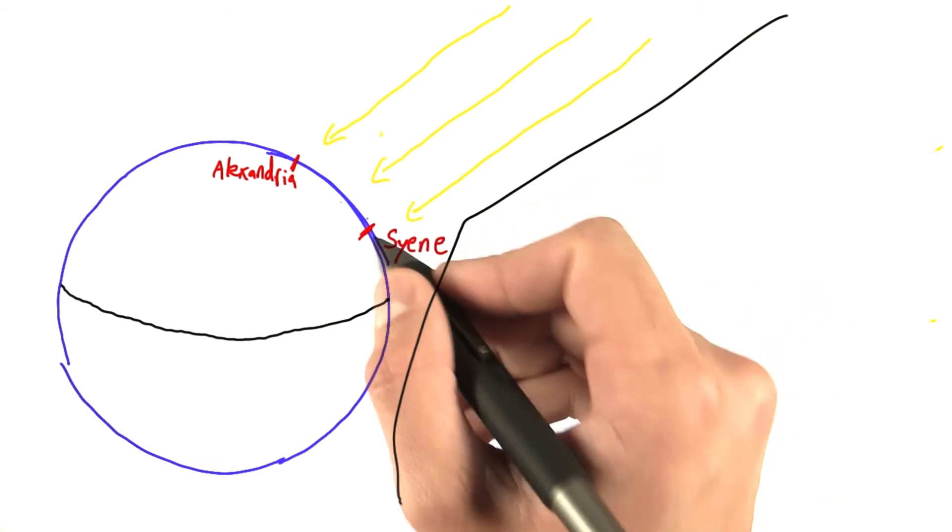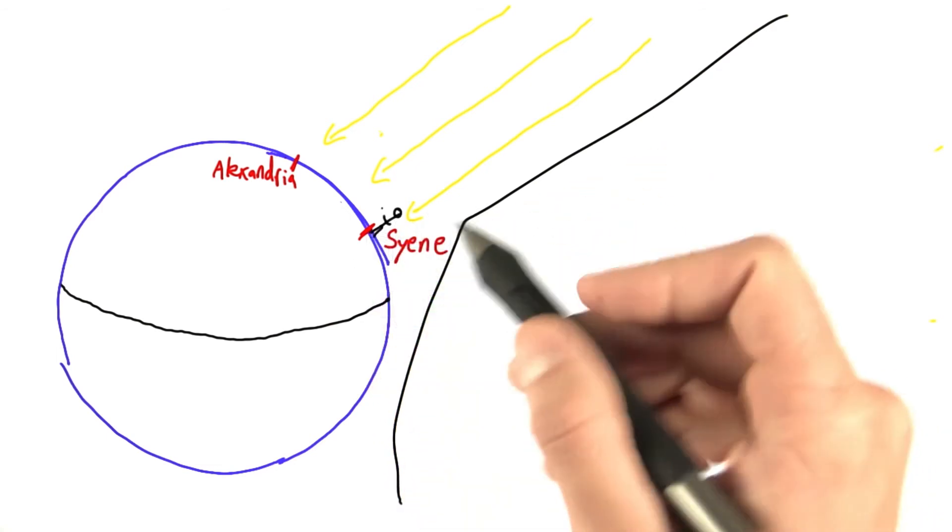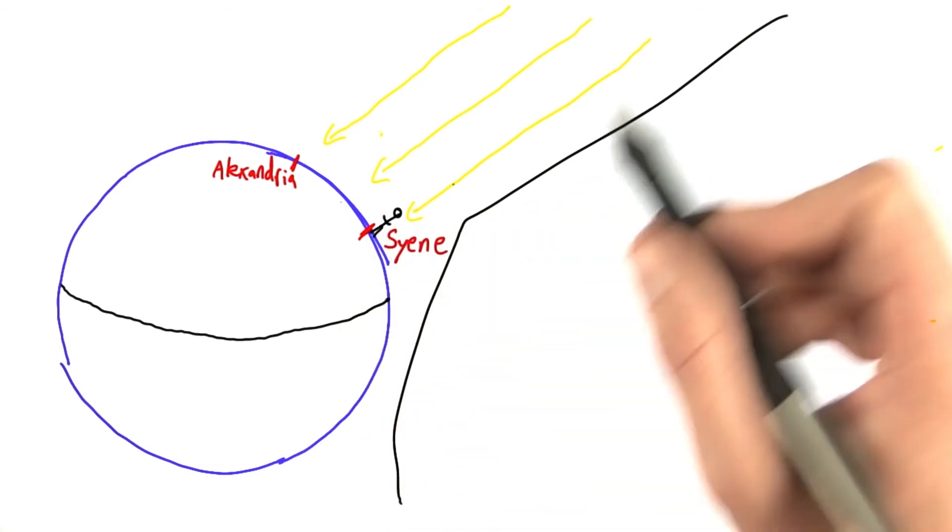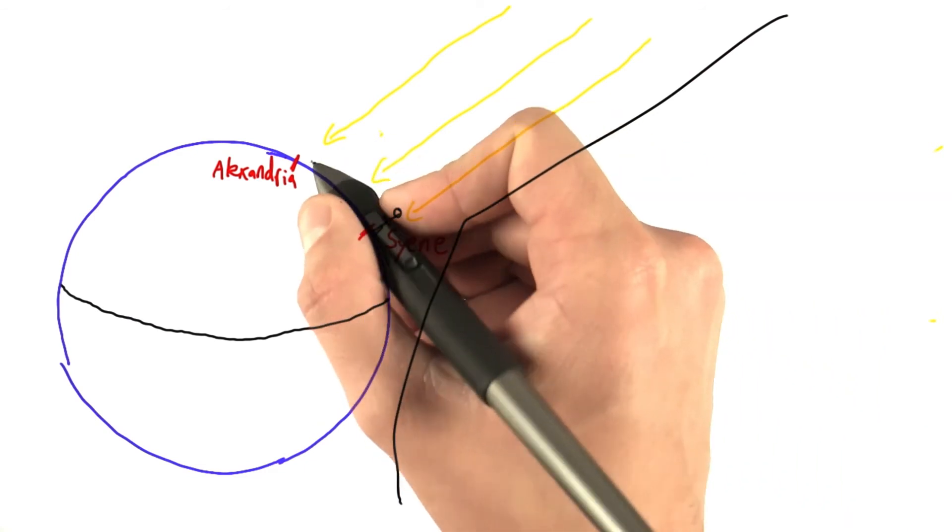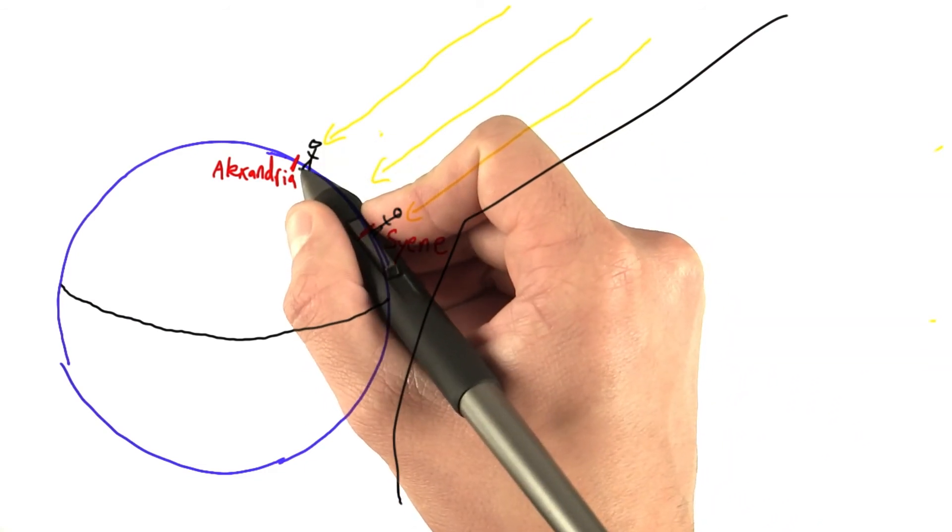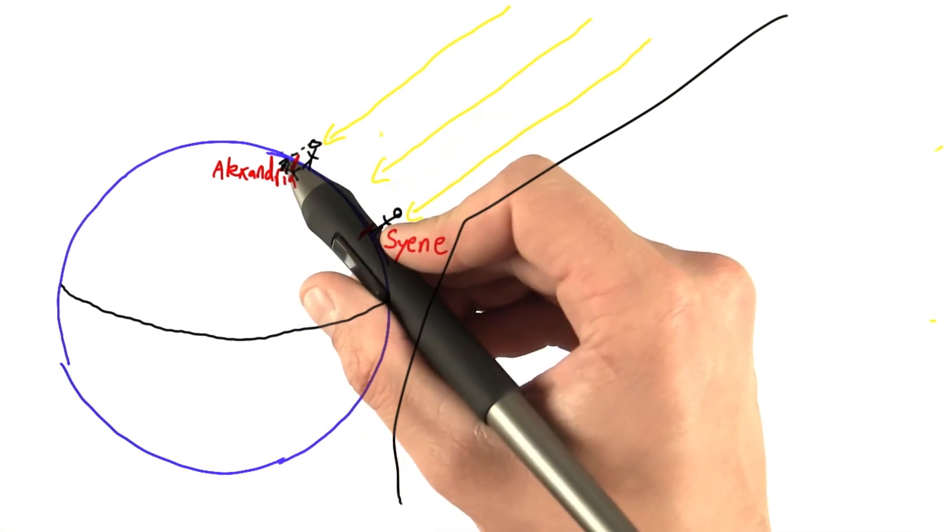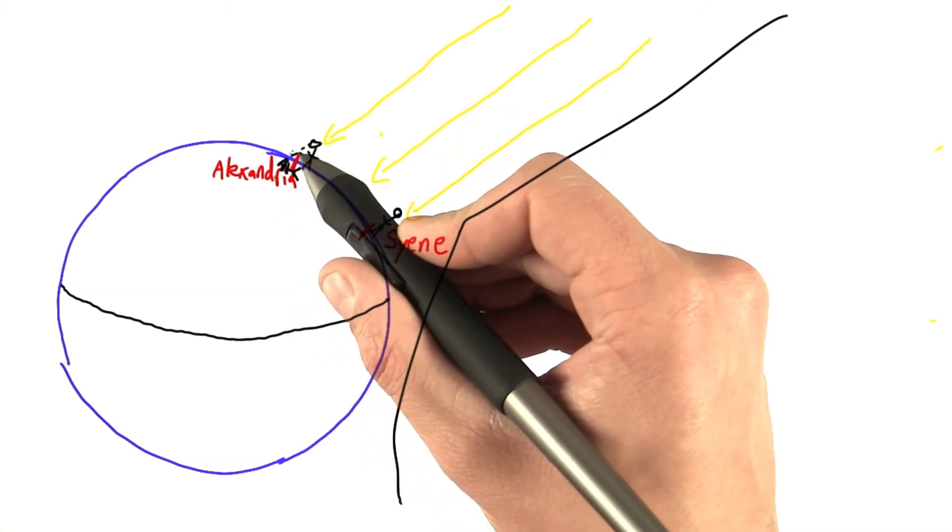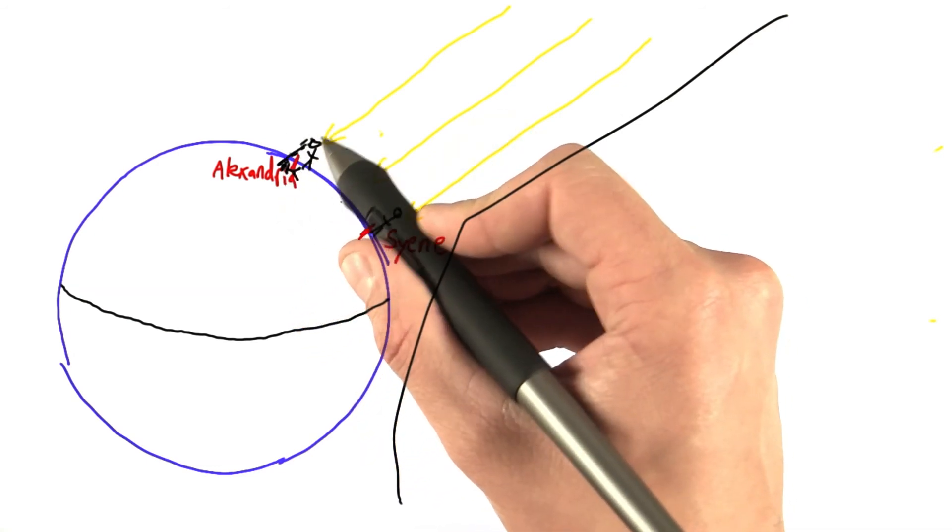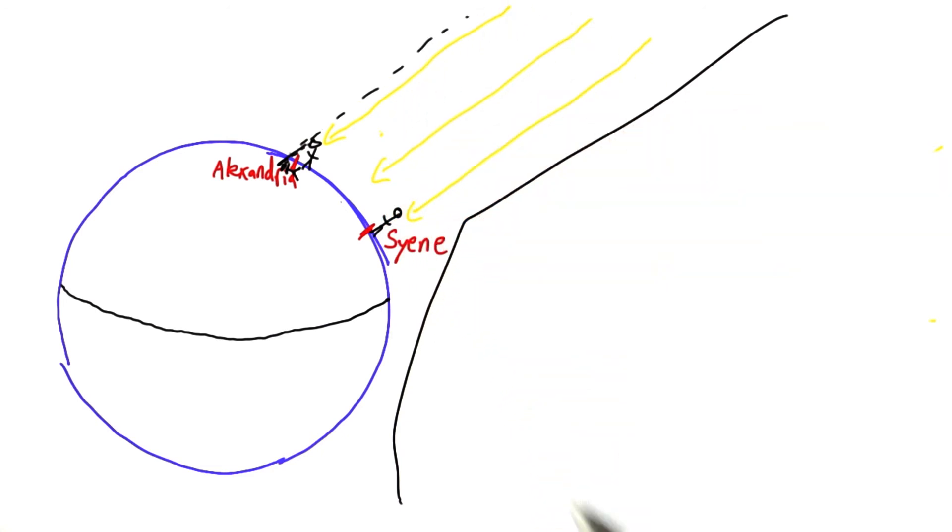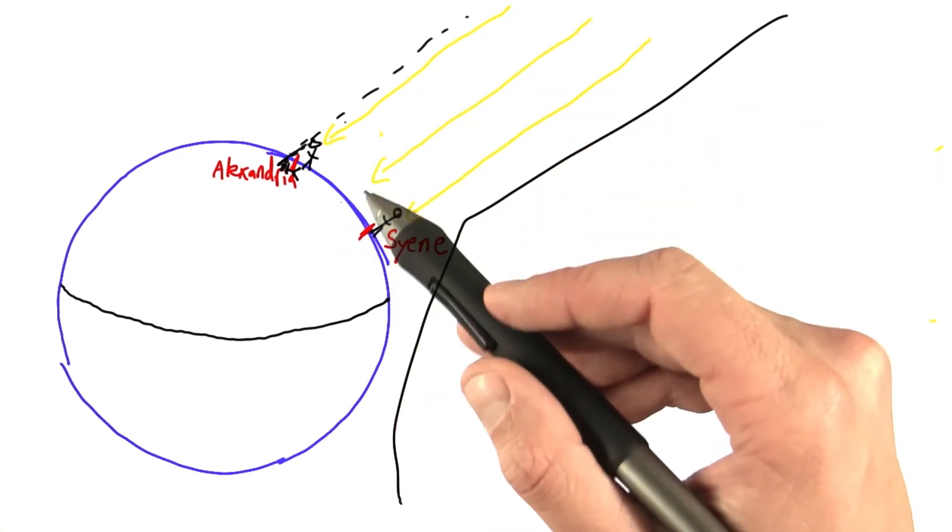Well, we've already talked about a person standing here in Siena. Their shadow would be directly below them because the sun's rays are striking vertically. Here in Alexandria, a person would have a tiny little shadow. And you can see that the angle from the head of the shadow to the head of the person, this line actually follows the sun's ray. We'll be using that more later. But for now, let's think.